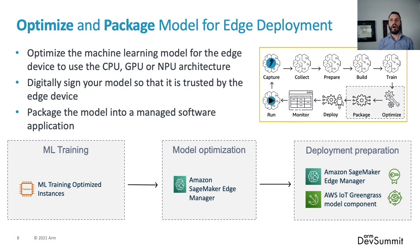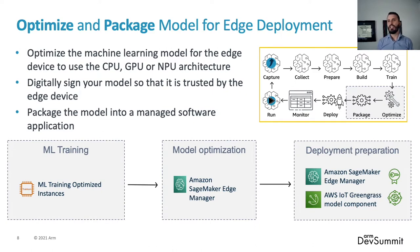The next phase in the pipeline is to optimize and package your model for an edge deployment. Now you have a model that's been trained in the cloud, but you need a way to ensure that you can get the best performance from the model when it's actually deployed to an edge device. You can optimize the machine learning model to use an ARM-based CPU, an onboard GPU, or a neural processing unit to take advantage of hardware acceleration. Hardware-accelerated models are smaller, faster, and consume less energy for battery-powered devices. Machine learning models are intellectual property and you need a way to sign those models using public key infrastructure so that only trusted devices can run your model and only trusted models can be run on the device.